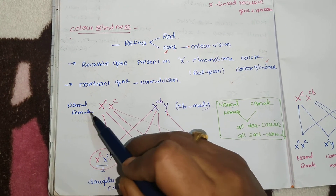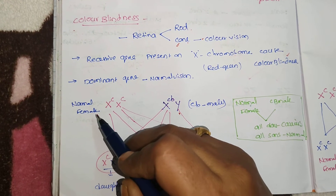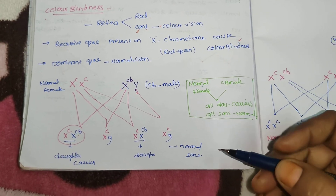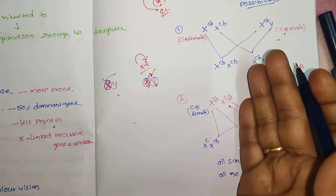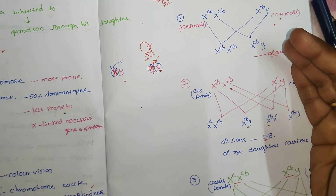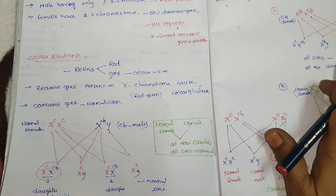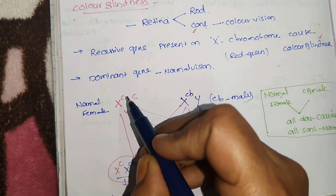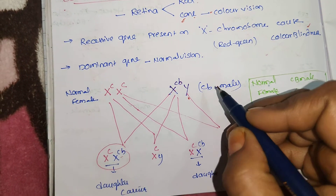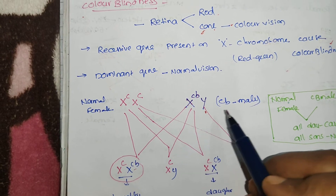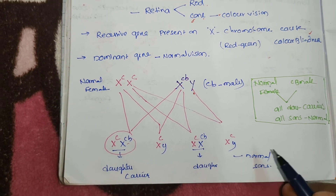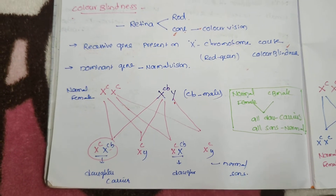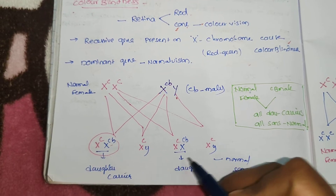In exams, they may ask the probabilities of offspring. For example: a normal female married to a color blind male — what is the probability of male and female children? Using the notation CC for normal and CB for color blind, if a normal female marries a color blind male, all sons will be normal and all daughters will be carriers.